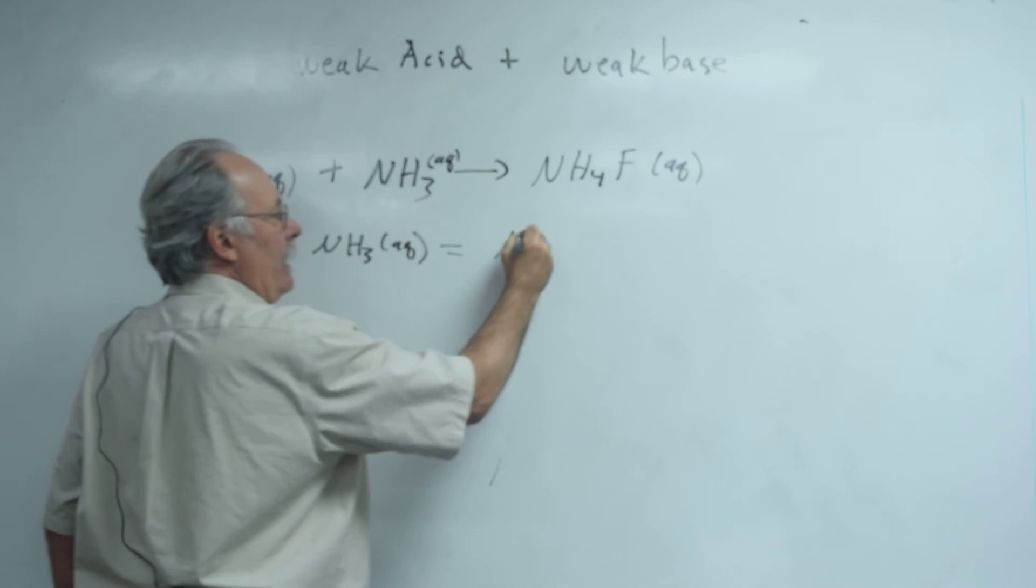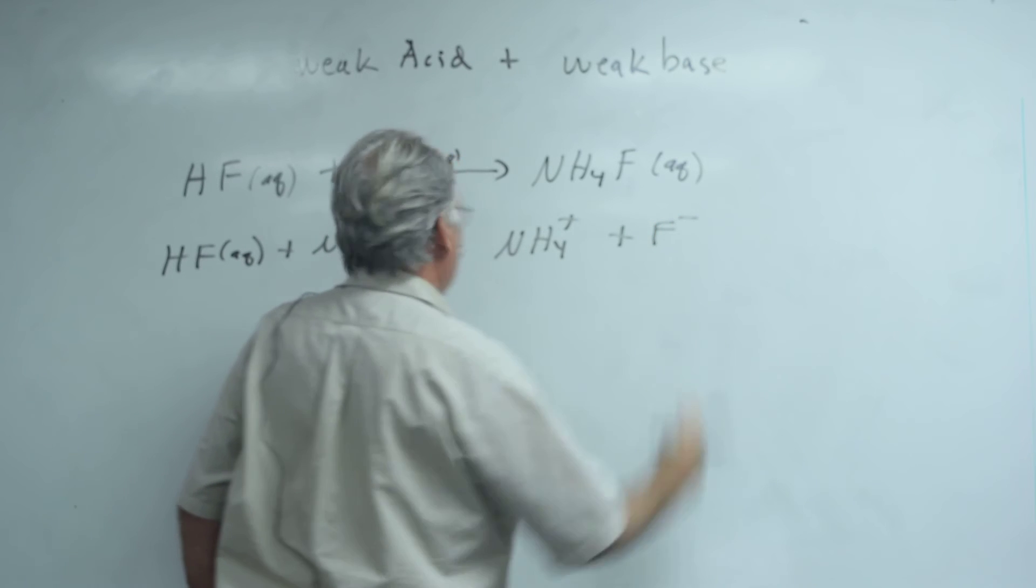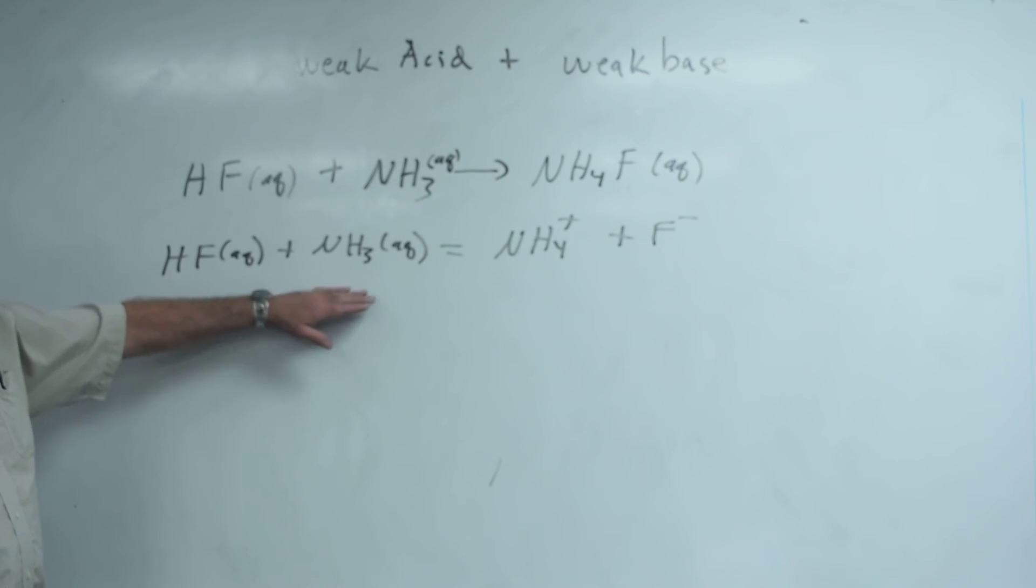Forming NH4 plus, plus F minus. Now, there are no spectator ions, so this is both the total and the net ionic equation.